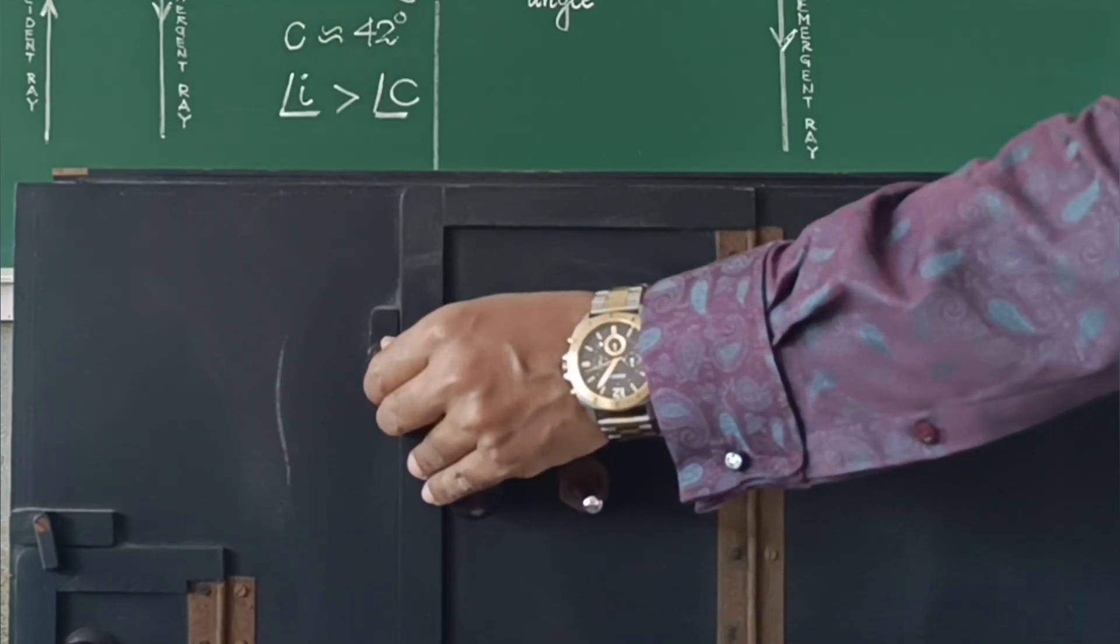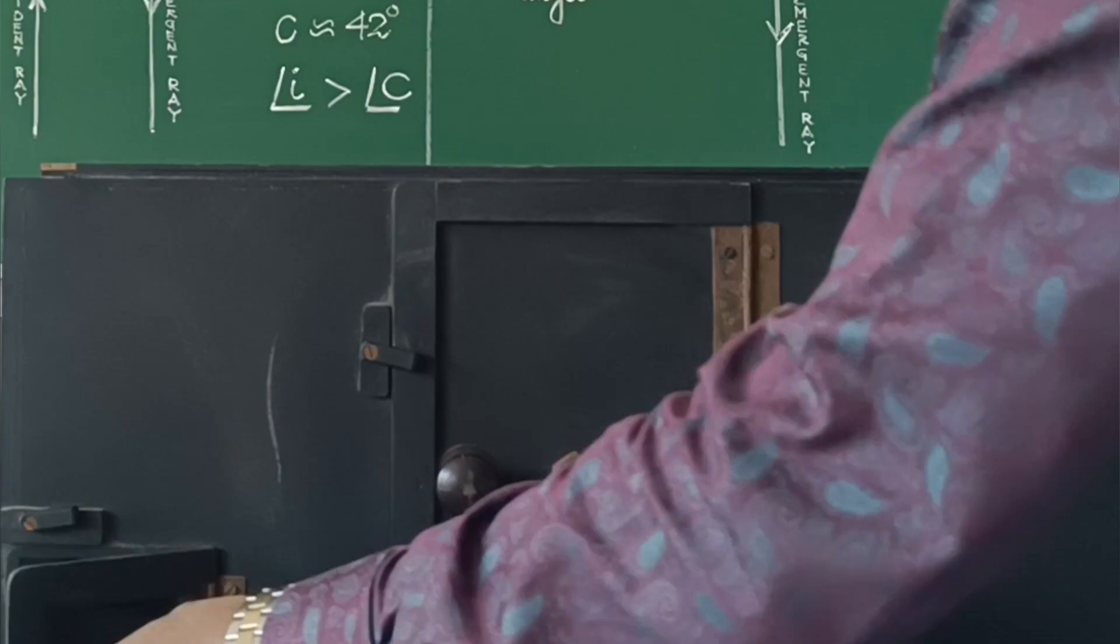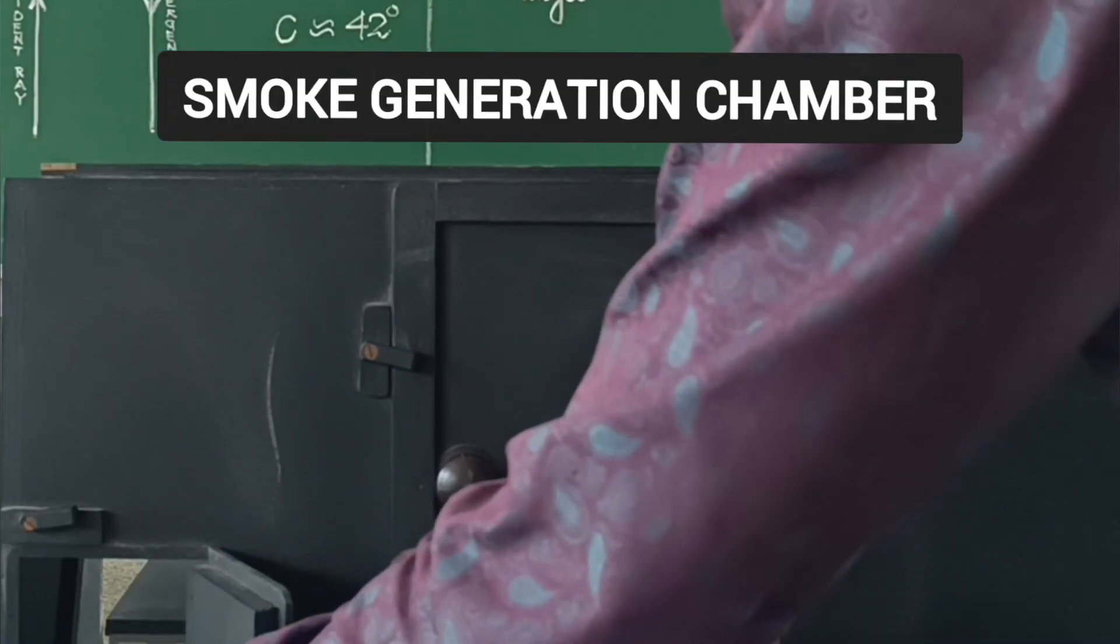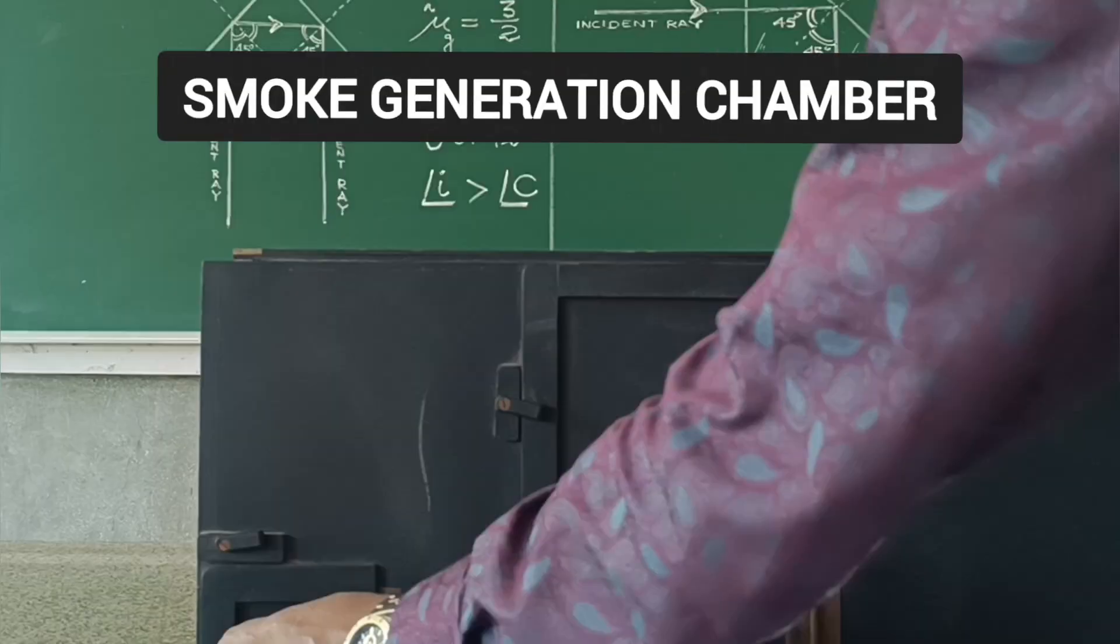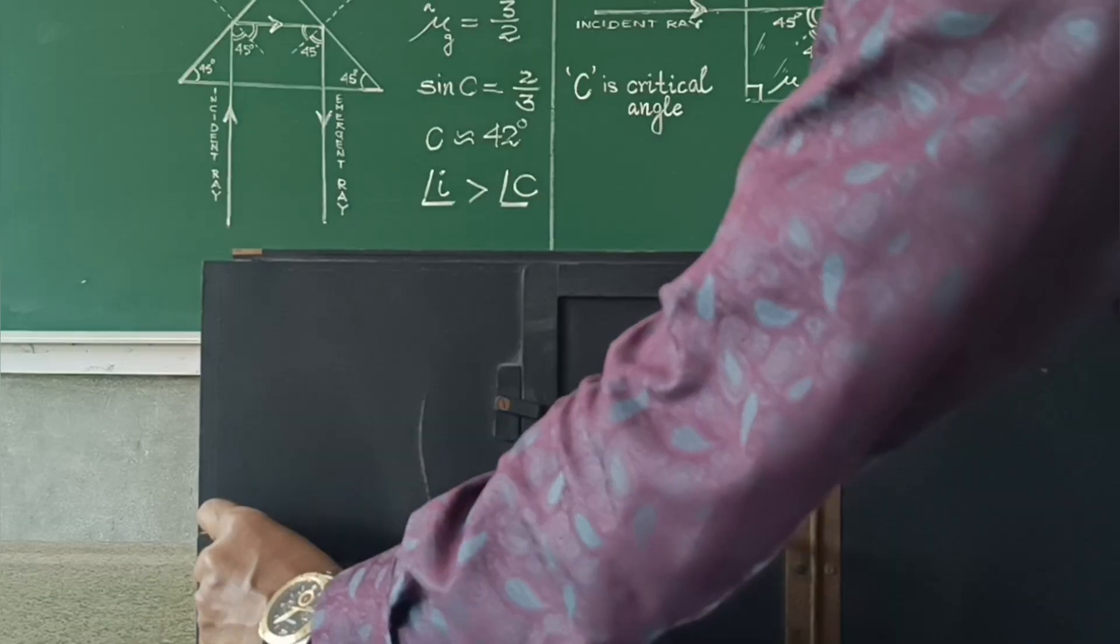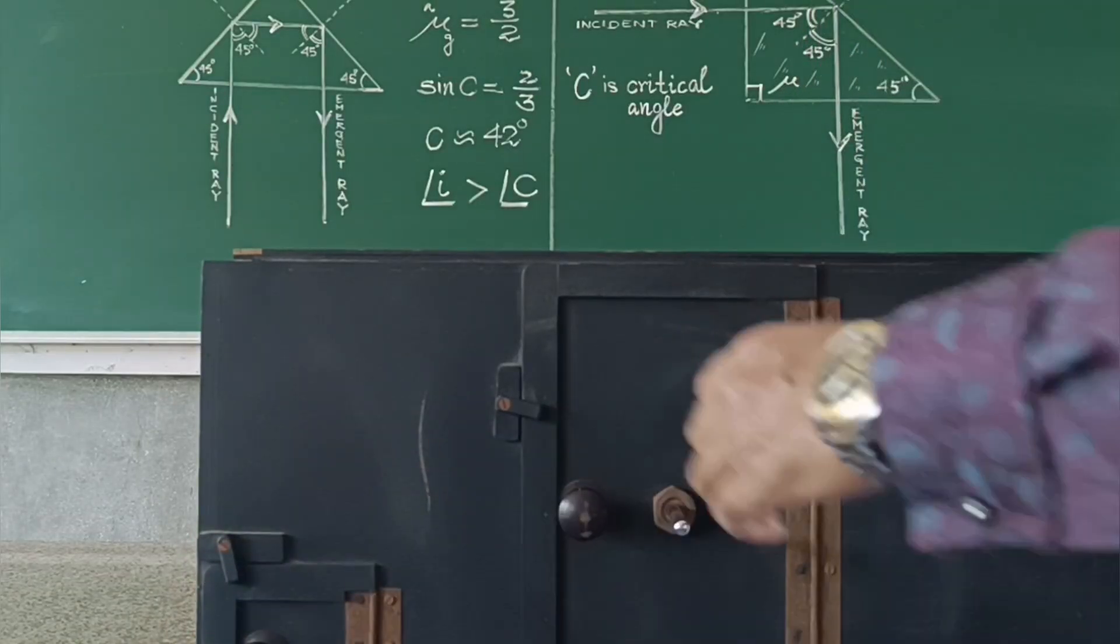Now, for smoke generation, a small safe smoke source is used to fill the box. Common sources include burning incense sticks, i.e., Agarbatti or Dhup.